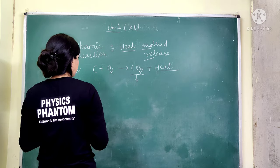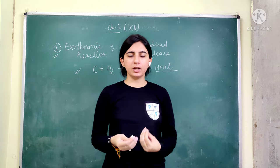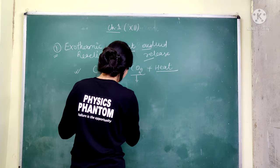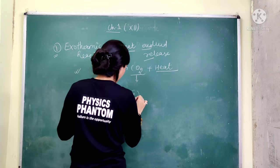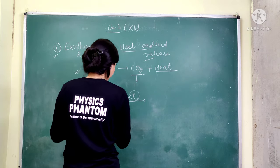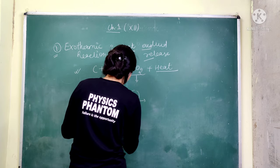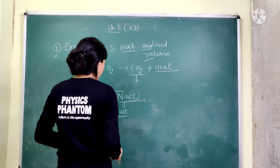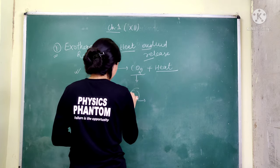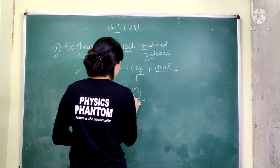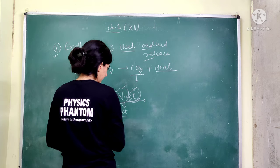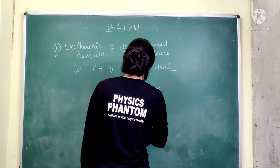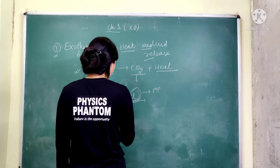This example of Exothermic reaction is given in NCERT. A very popular example of Exothermic reaction is NaCl — sodium chloride — which is the scientific name for common salt, the salt we use for eating at home. When sodium and chlorine react together, we get the compound NaCl. This is a very popular example of an Exothermic reaction. The formula for common salt is NaCl.